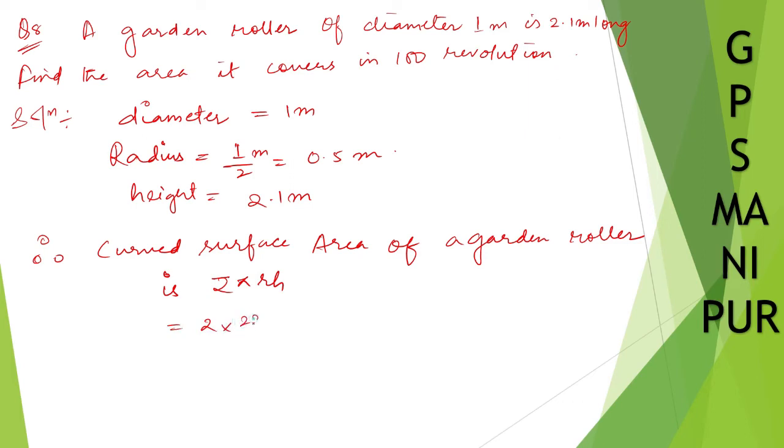Which will be equal to 2 × π, that's 22/7, × r, which is 0.5 meters, × h, which is 2.1 meters. We can cancel 7 and 21, giving us 0.3. 22 × 2 is 44.